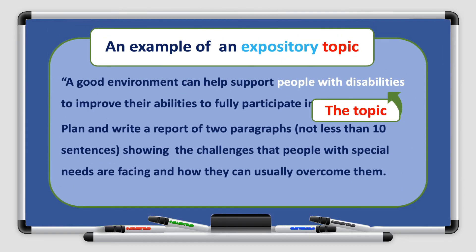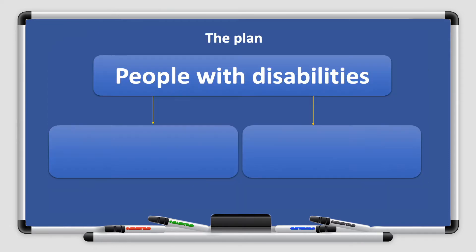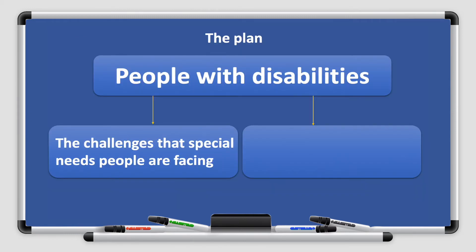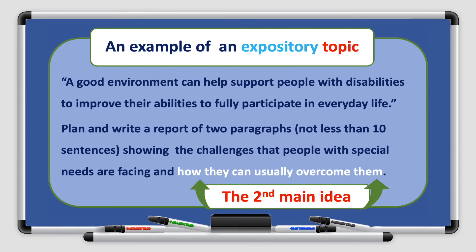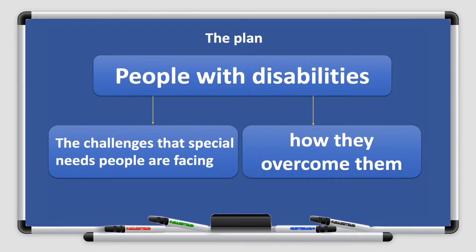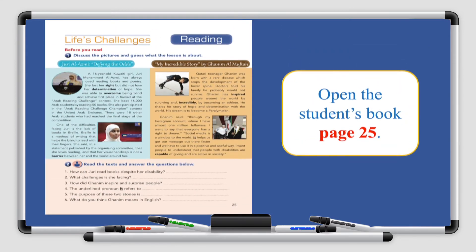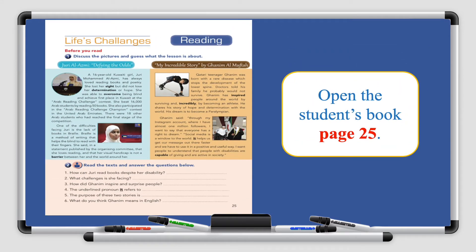Here is an example of an expository plan. As we discussed, our topic will be about people with disabilities, so we will write that in the topic section. The first main idea will be the challenges that people with special needs are facing, and the second main idea is how they can usually overcome them. To get more information, please open the students' book, page 25.